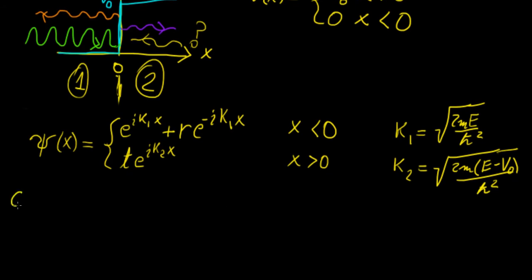Case number one is going to be E equals V0. If we put that into our equation here, we're going to have psi 2x equal to T, because k2 is going to become 0.